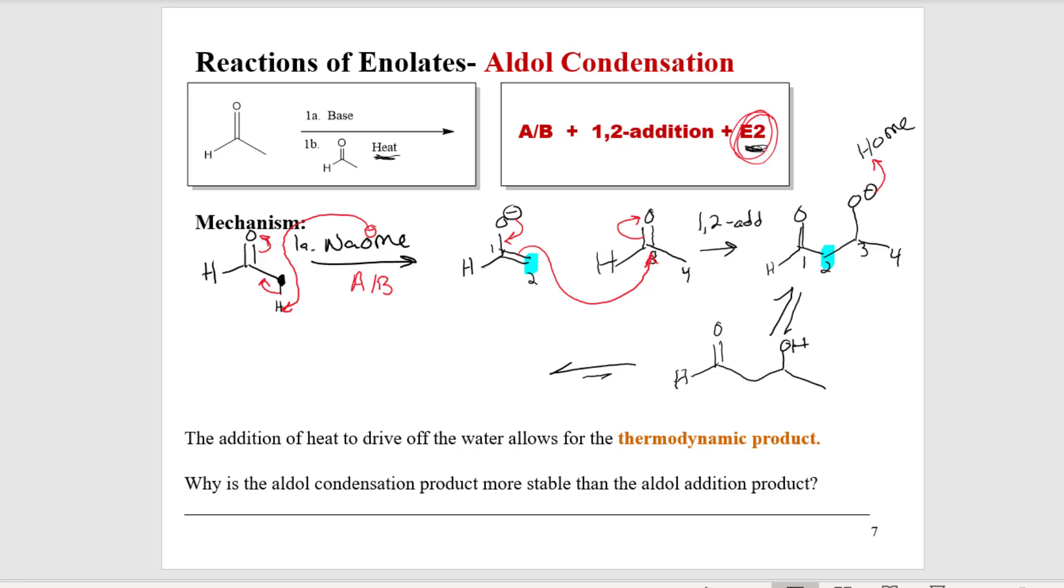Remember, we still have base around. We have base around. We're under basic conditions. We still have protons at the alpha position. So the heat is going to allow an E2 reaction. The negative charge is going to act like a base, and it's going to go after, no surprise, it's going to go after the alpha proton. But instead of forming the enolate, which it could do, but it could reverse itself back out. Instead, how about it does an elimination reaction, popping off OH-. Now you might say OH- isn't a good leaving group, but we're already under strongly basic conditions, so it's actually okay. And there's a driving force for this.